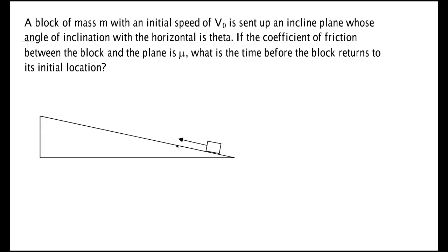The inclined plane has a certain inclination of theta. The block of mass m is sent initially up with a speed of v₀. It's going to go up to some point, turn around and come back the other way. There's friction in this problem between this block and this plane.